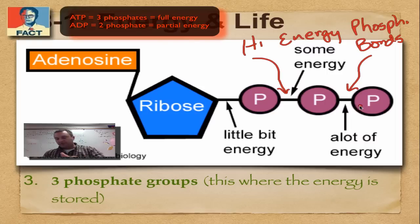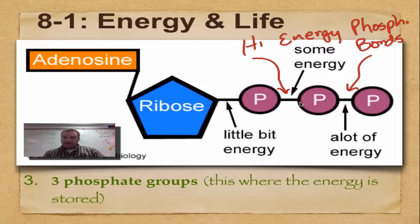When you pop off this first one, you release the most energy. When you pop off the second one, you release a little bit more energy, and you hardly ever pop off this third one, although you can. So this is the molecule that's used to transfer energy from a catabolic reaction to an anabolic reaction. ATP is used to move energy around within your cells.